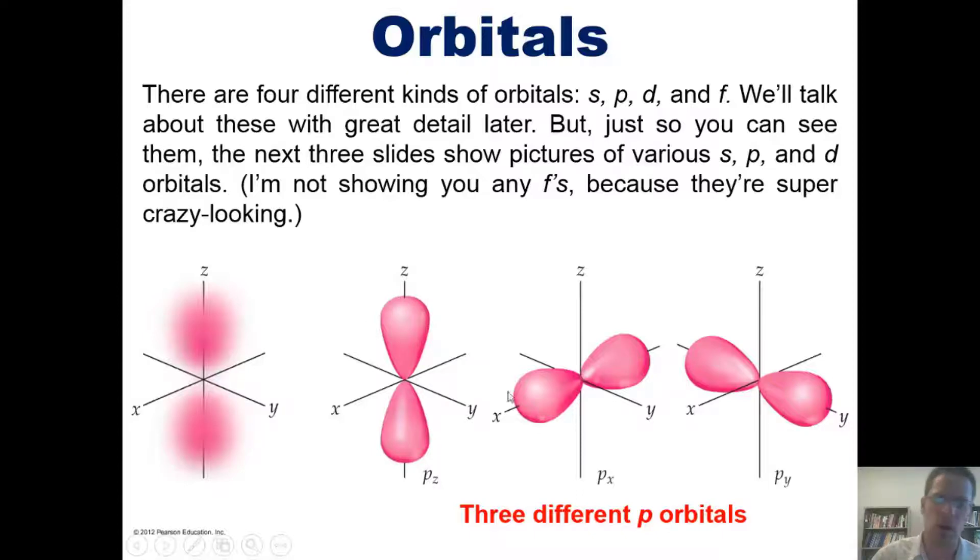And although they're drawn out separately, in reality each of these p orbitals actually straddle this central location, which is where the nucleus is found. One of those p orbitals straddles the x axis, one straddles the y axis, and one straddles the z axis, with each one being perpendicular to each other with 90 degree angles separating them.